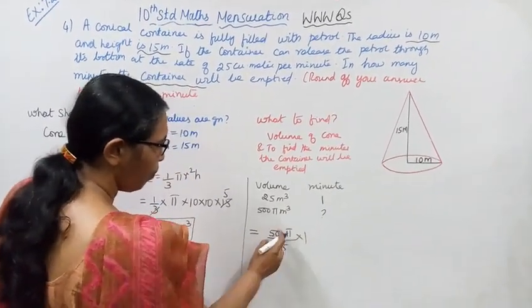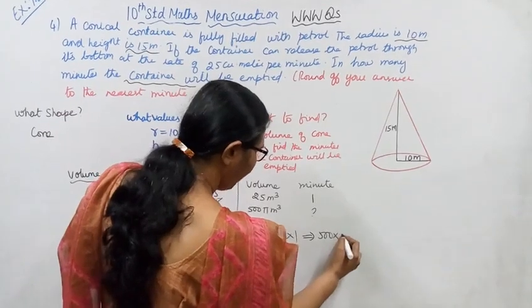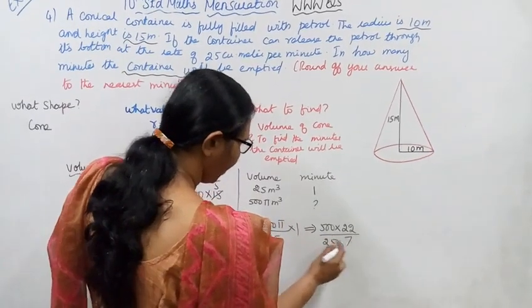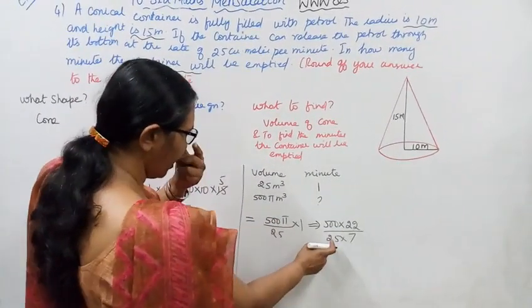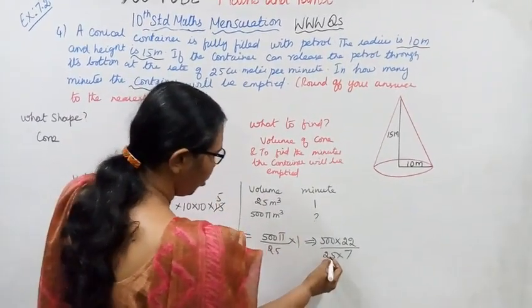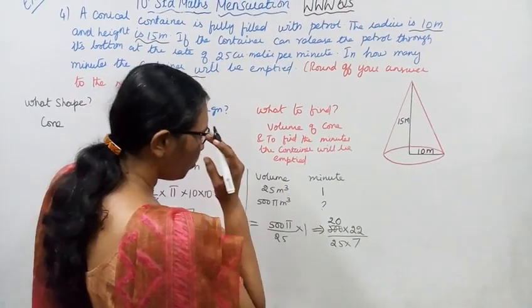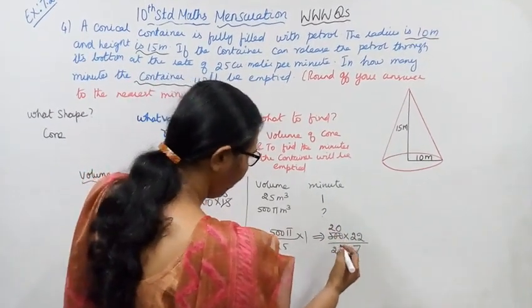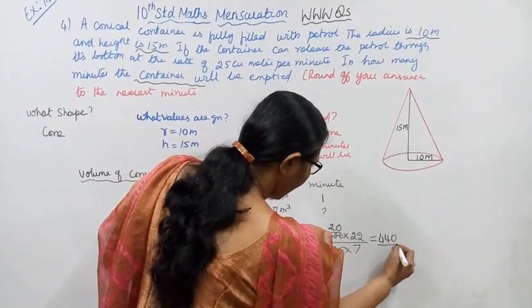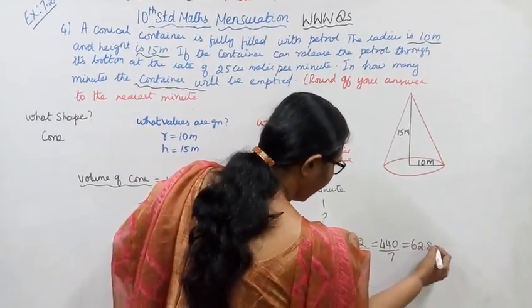505 by 25 into 1. 505 by 25. 22 by 7 into 25. 500 divided by 25 is 20. 440 by 7.